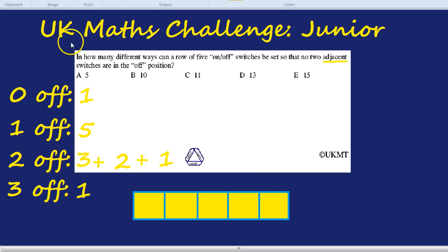There we have all our combinations. And I hope you like how systematic we were when we did that. Finally, we can add them up. One plus five is six, plus three is nine, plus two is eleven, plus one plus one is thirteen. So there are thirteen combinations without there being two adjacent off switches.